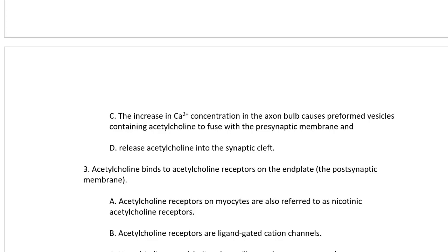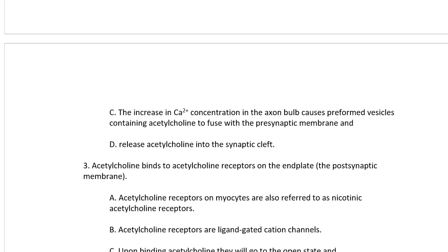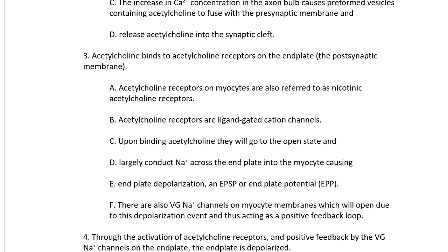The neurotransmitter being released is acetylcholine. Acetylcholine-filled vesicles within the axon bulb are released once the presynaptic membrane is depolarized — voltage-gated calcium channels open, calcium flows down its electrochemical gradient into the axon bulb, increasing calcium concentrations and leading to acetylcholine release through fusion of vesicles with the presynaptic membrane. Acetylcholine then binds to acetylcholine receptors on the end plate — the postsynaptic membrane. The term 'end plate' is a special name given to the postsynaptic membrane when it belongs to a muscle cell.